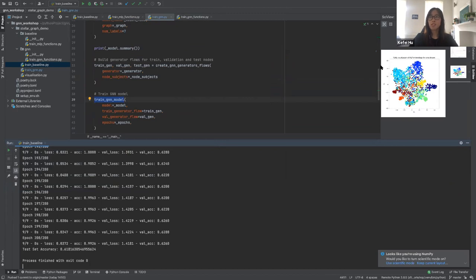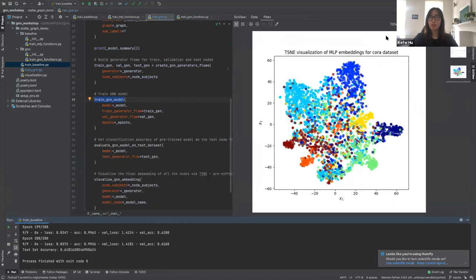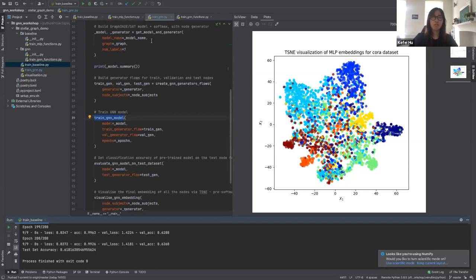First, this is the t-SNE visualization for the embedding from the baseline model. The data points look kind of segmented, but still with a lot of overlap. The test accuracy is roughly 62 percent. It's not so bad. Let's see if graphs can do better.